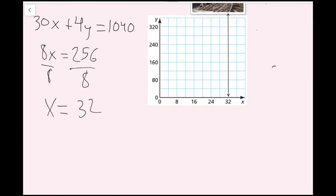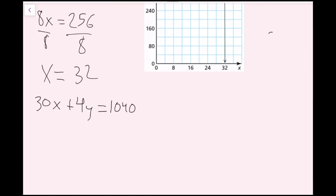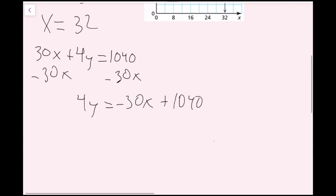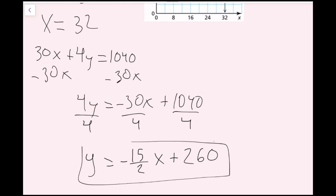I'll put 30x plus 4y equals 1,040 into slope-intercept form. Subtracting 30x from both sides gives 4y equals negative 30x plus 1,040. Dividing every term by 4 gives y equals negative 15 over 2 times x plus 260 — which is the same as negative 7.5x plus 260. The y-intercept is 260, so I'll graph that.